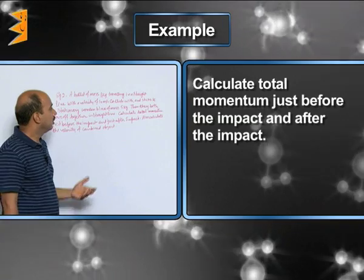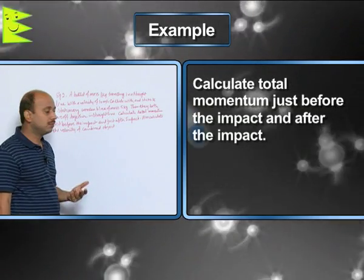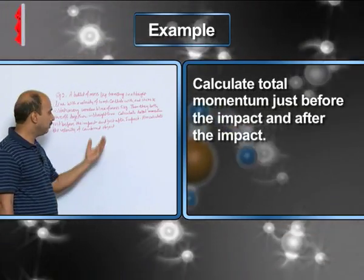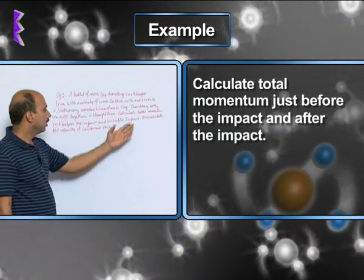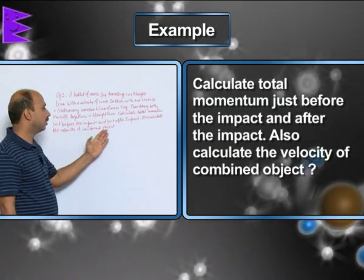You know, this is the system here, so the total momentum will remain conserved. It means just before the impact and after the impact, momentum will remain the same. And also calculate the velocity of the combined object.